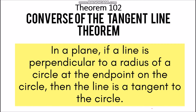Next, we have Theorem 102, which is the converse of the tangent line theorem. In a plane, if a line is perpendicular to a radius of a circle at the endpoint on the circle, then the line is a tangent to the circle. So to use Theorem 102, you should first prove that a line is perpendicular to the radius, so that you can conclude it is tangent to the given circle.